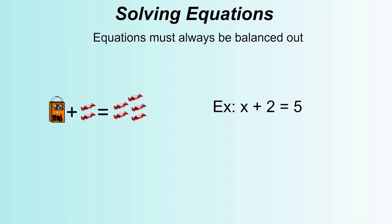Now if we think about this logically, something added on to two has got to equal five. There's got to be three sweets contained within the bag for this to be an equal and balanced equation. What we want to do is form a process where we can develop equations from simple examples like this into more complex equations.